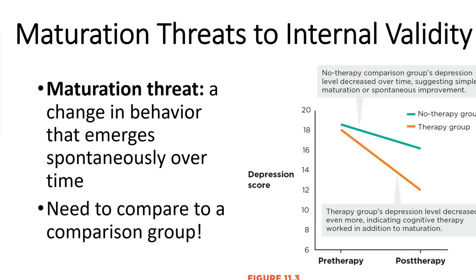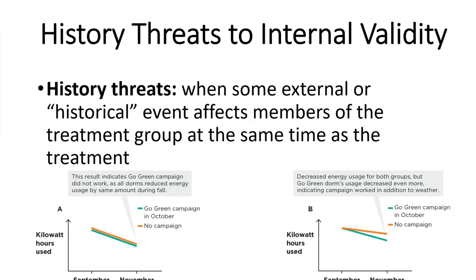Because the no-therapy group improved but the therapy group improved more — with a steeper slope and a larger reduction in depression score — we could still conduct statistics, account for or subtract out the maturation threat effect, and conclude that there was a benefit from therapy. But you can't do any of that without a comparison group. That's going to be a repetitive take-home message: you need a comparison group.